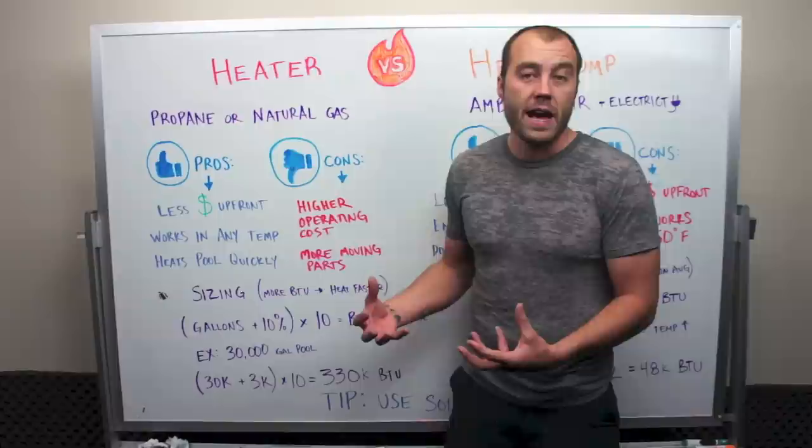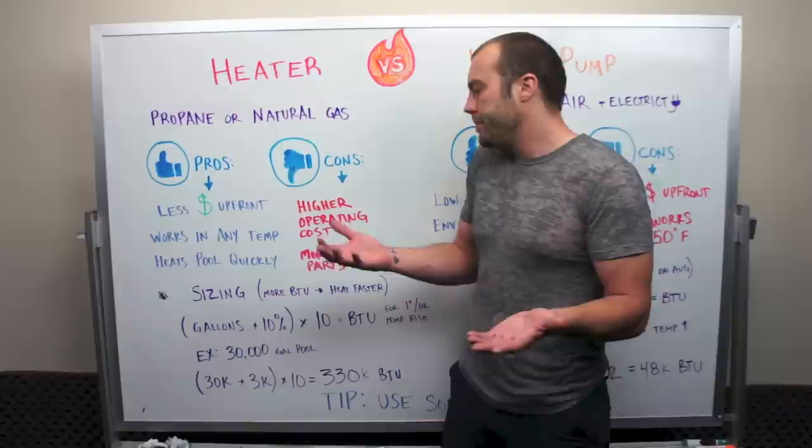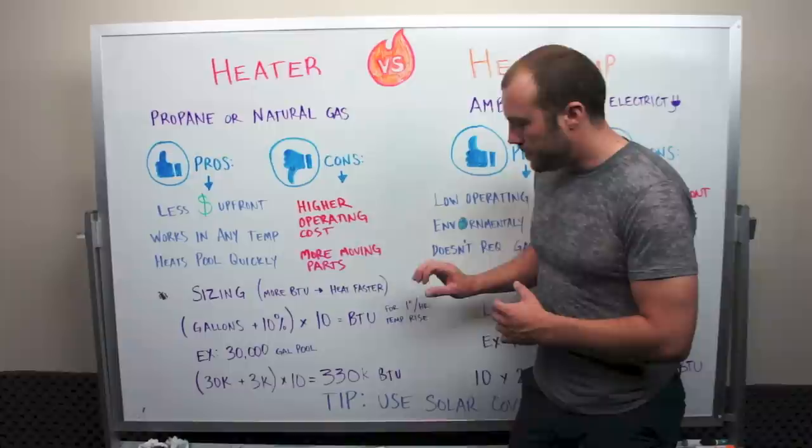For simplicity, we're also going to assume that we're looking for one degree per hour rise. When you use more BTU on a heater, it's actually just going to heat the pool faster. If you have a 400K BTU heater and a 200K, the 400 will burn through the gas twice as quickly but it'll heat the pool twice as fast.